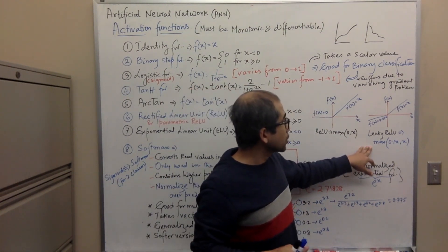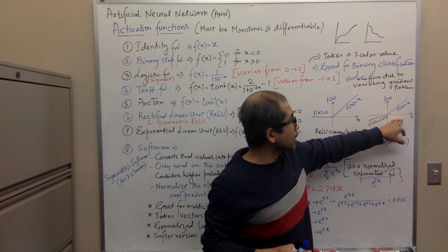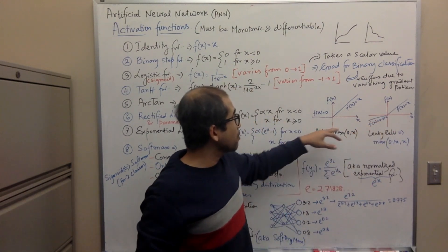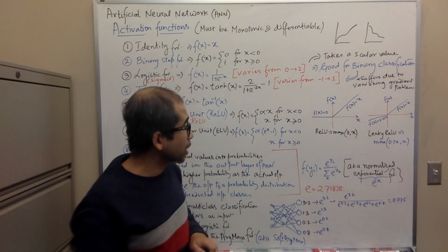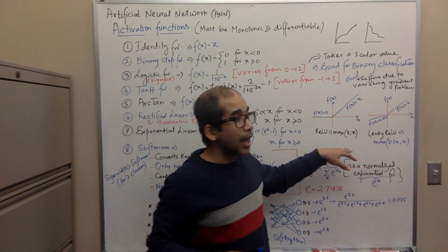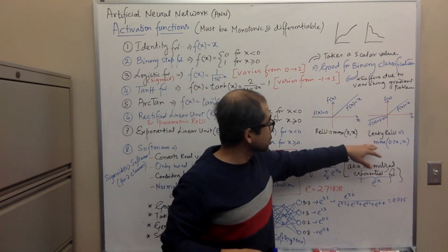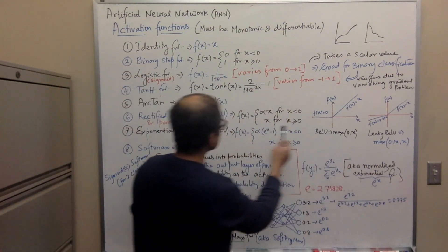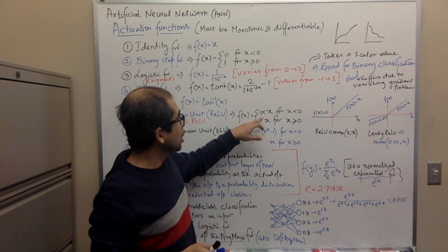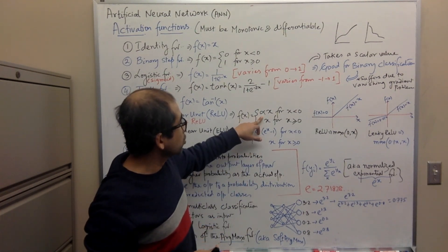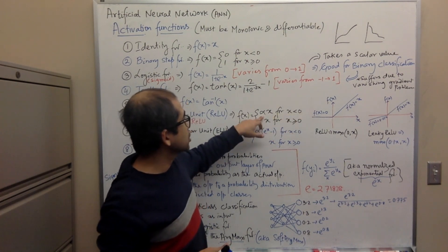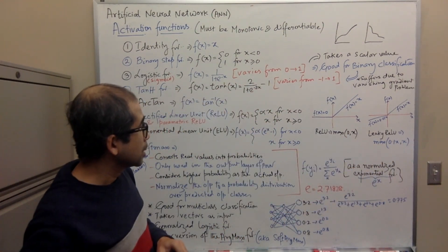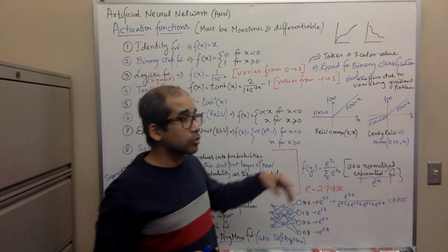To address ReLU's problem with negative values, there is a variation called Leaky ReLU. If x is positive, f(x) is the same as x. But if x is negative, instead of making it zero, it becomes a very small number like 0.01 times x. In the parametric form, this small multiplier is represented as alpha. When alpha is zero you get standard ReLU; for Leaky ReLU, alpha is a small value like 0.01.